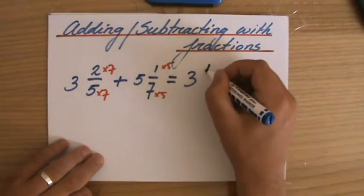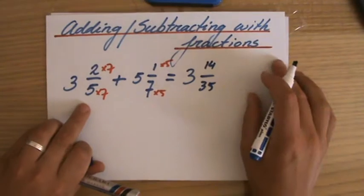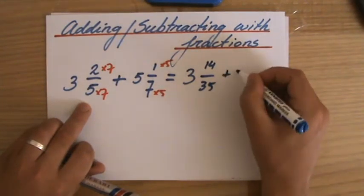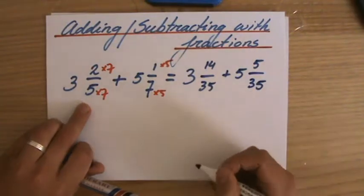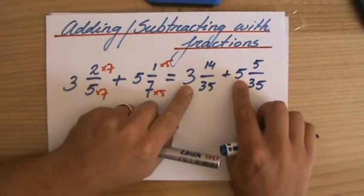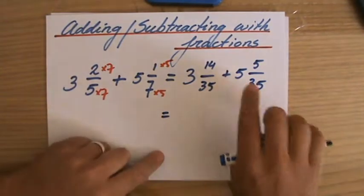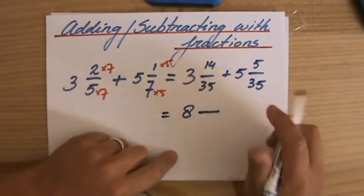So three, fourteen over thirty-five. That's an equivalent fraction that is the same. I'm just manipulating it. And five, five over thirty-five. And if I perform that addition, I can add the whole numbers, the units. Three plus five, that is eight. And then I add my fractions.